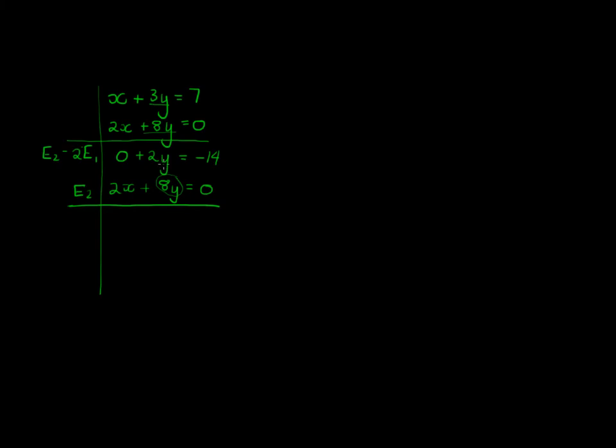So I'll keep equation 1 as it is for now: 0 plus 2y is equal to negative 14. And for my second equation, I'm going to take equation 2, and I'm going to subtract equation 1 not just once, but four times. So 2x minus 4 times 0 will still just be 2x. 8y minus 4 times 2y will be 8y, so 8y minus 8y gives me plus 0. 0 minus 4 times 14 will give me 56 negative 56.